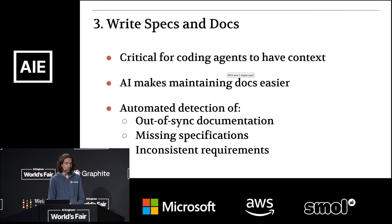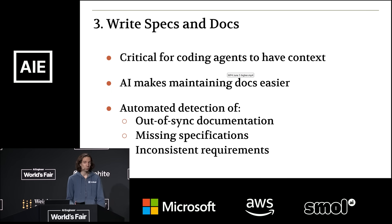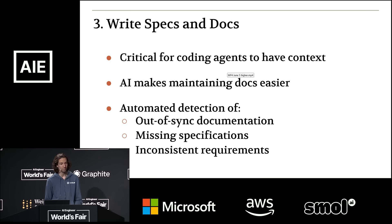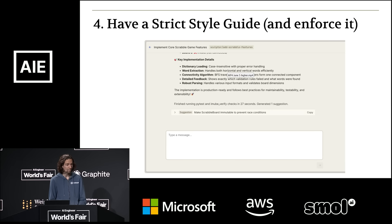Third, you want to think about writing specs and docs as a first-class part of the workflow. One of the main reasons I didn't write lots of specs in the past is that it's annoying to keep them up to date. But this is really important if you want coding agents to have context on the project, because they don't have access to your email or Slack. In Sculptor, one of the ways we make this easier is by detecting if code and docs have become outdated, reducing the barrier to writing and maintaining documentation. It can also highlight inconsistencies or parts of specifications that conflict with each other.